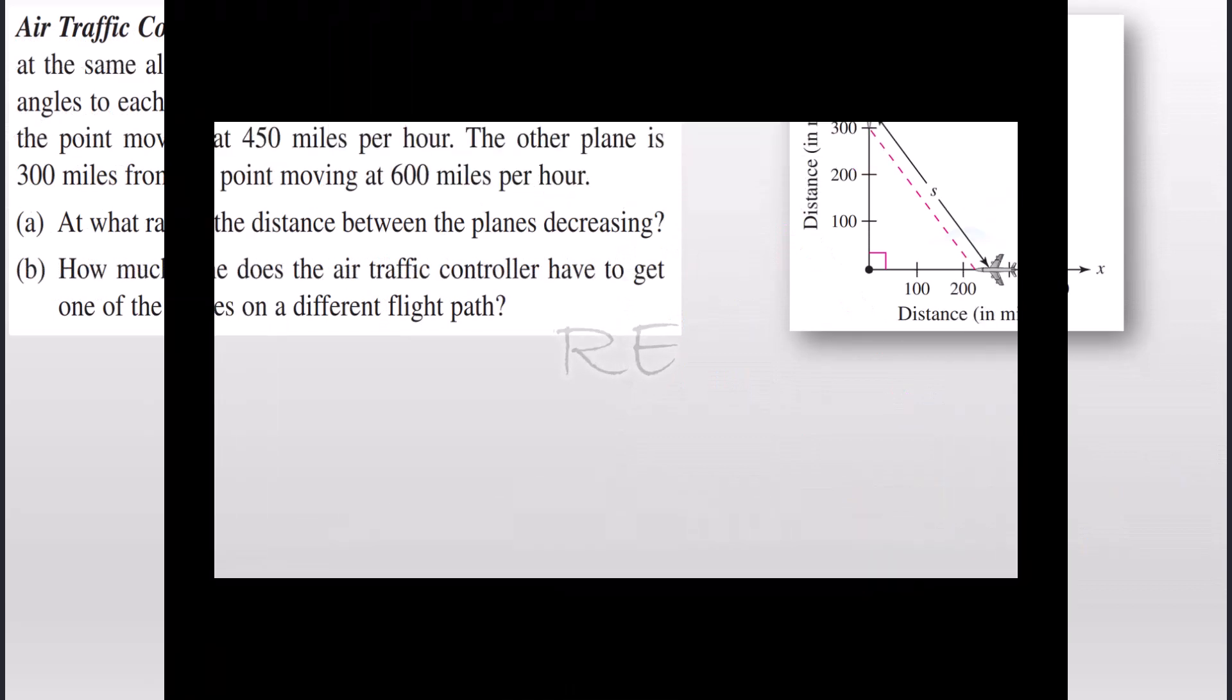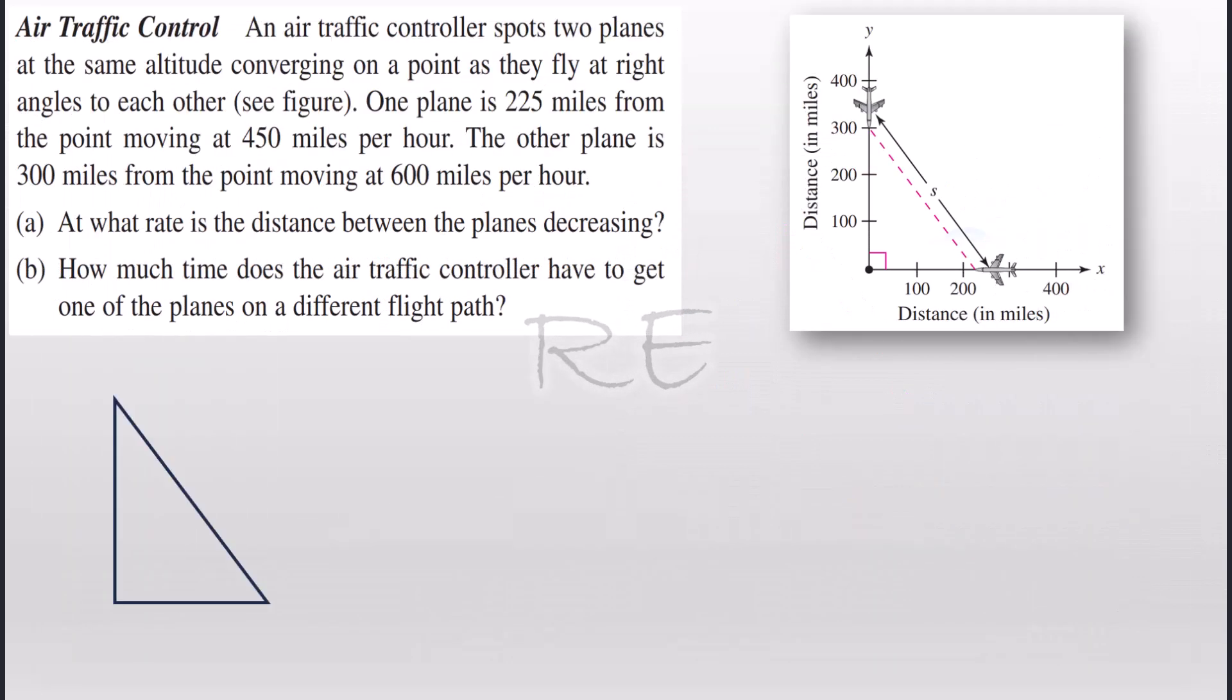This problem can be modeled with a right triangle. Now the first plane is at a distance x equal to 225 from a point and the distance is decreasing. Therefore the speed dx/dt is equal to negative 450 miles per hour.